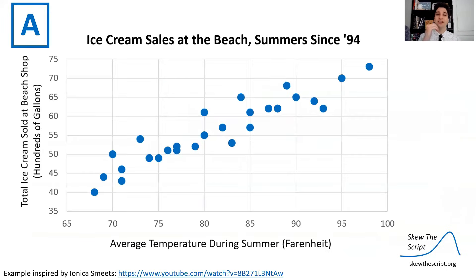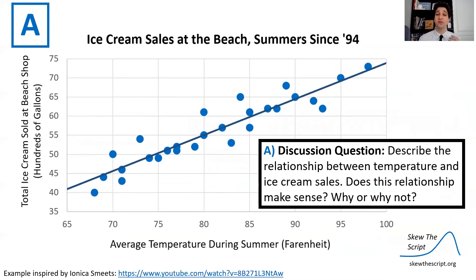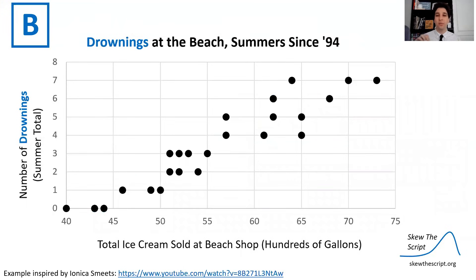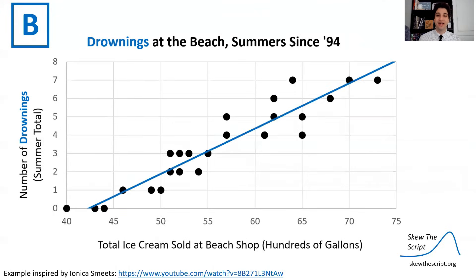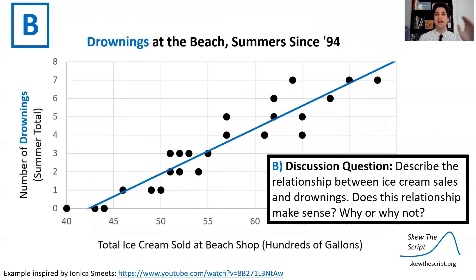Let's discuss what her data looks like. Here's ice cream sales at the beach — if we fit a least squares regression line, I want you to describe the relationship between temperature and ice cream sales. Does this relationship make sense? It should, if you think about why people want to buy ice cream. More interestingly, here's what the data looked like between ice cream sales and drownings. For your discussion question, describe the relationship between ice cream sales and drownings. Does this relationship make sense to you? Why or why not?